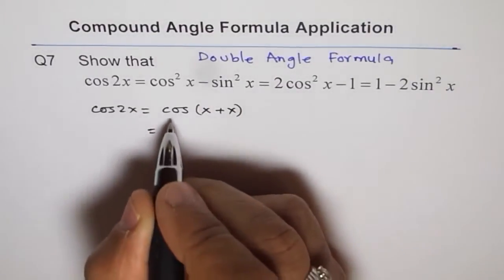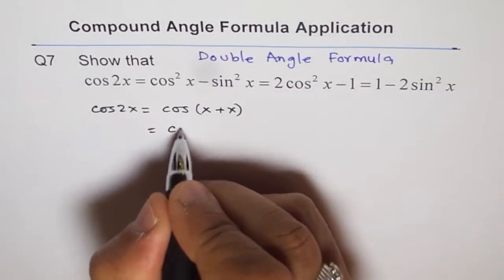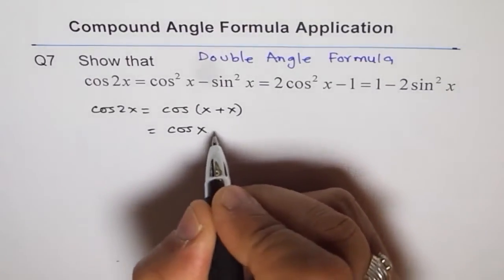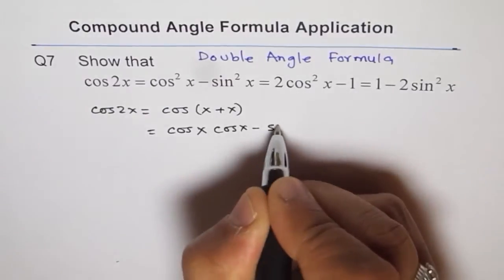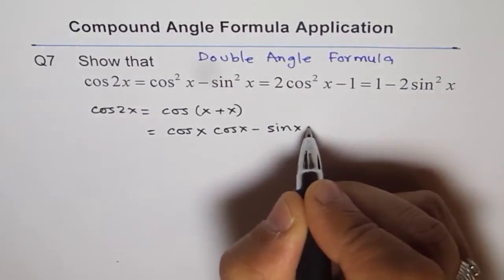And now, using double angle formula, I will just expand it and we get cos x and then again cos x minus sin x, sin x.